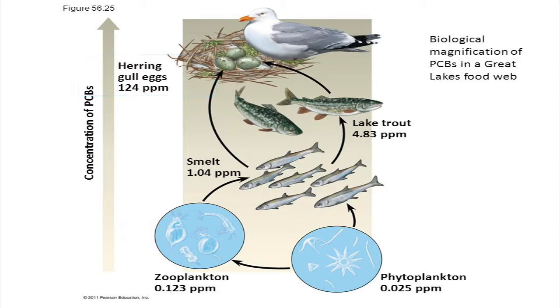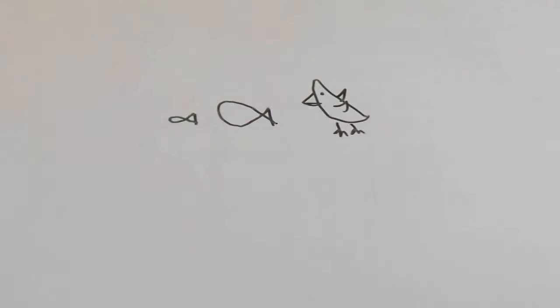124 at the herring gull. This is because as organisms get eaten by other organisms, the toxins accumulate and become more concentrated.